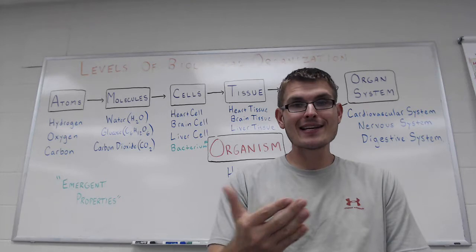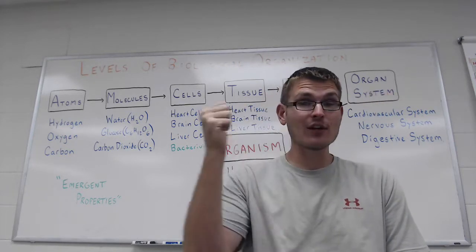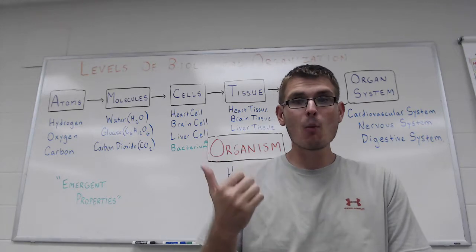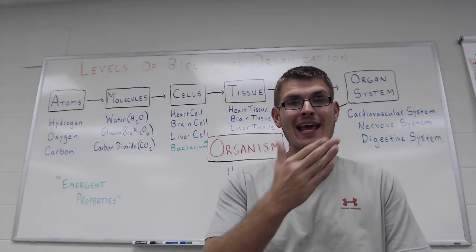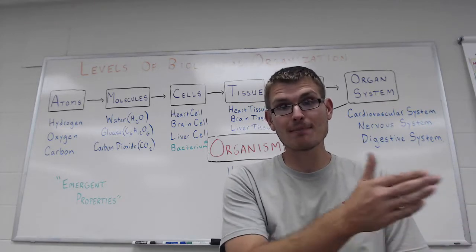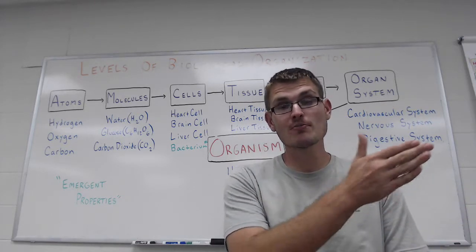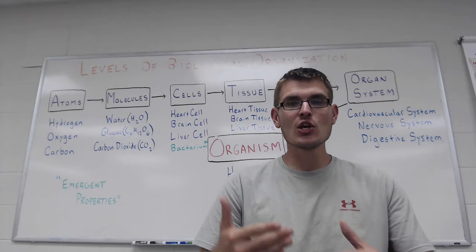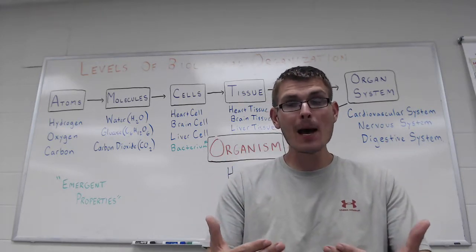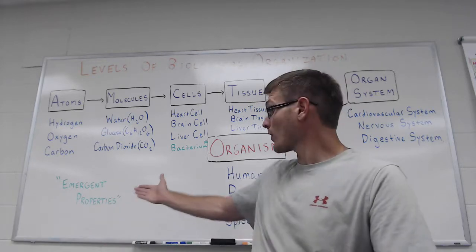So one thing to address is that we have all of these different levels of organization that are listed up on the board behind me. But one thing to consider is that every time you move from a level of organization that is more complex than the last, you are adding on not only a layer of complexity, but you are also taking on what are called emergent properties.